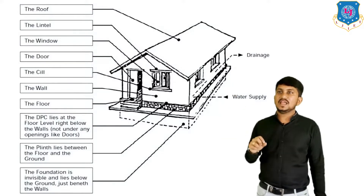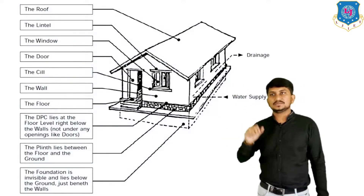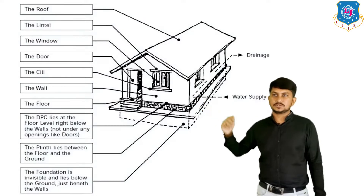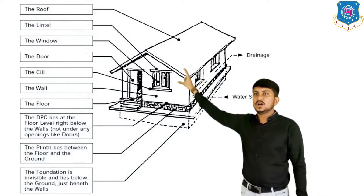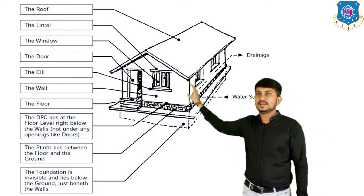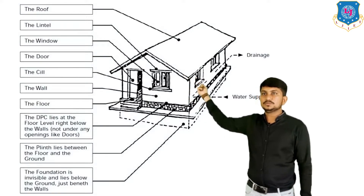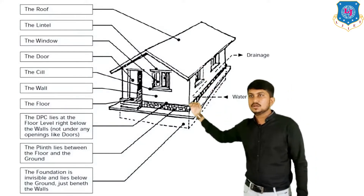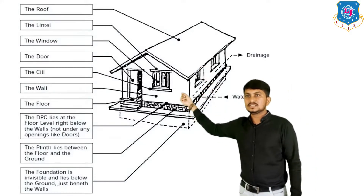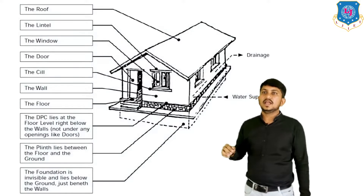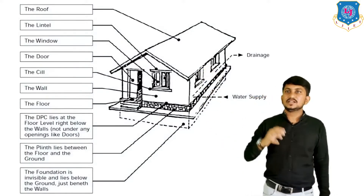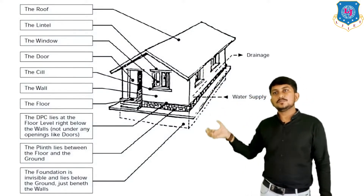Above the damp proof course there is a floor and walls. There are also components like doors and windows. Above a window is a component called the lintel, and below the window is called the sill. The topmost part of the building is called the roof. These are the overall components of a building.